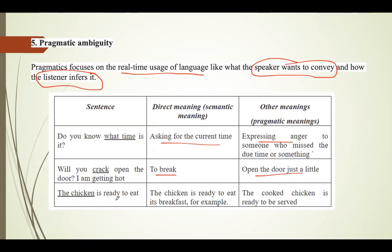Another example of pragmatic ambiguity is 'The chicken is ready to eat.' The direct meaning is that the chicken is hungry and ready to eat its breakfast, while the pragmatic meaning is that the cooked chicken is ready to be served. Pragmatic ambiguity completely focuses on what the speaker wants to convey as well as how the listener interprets it.